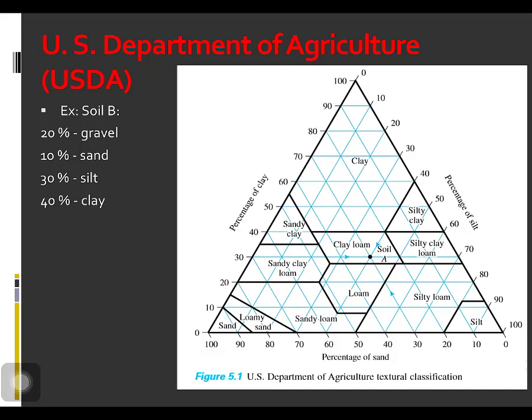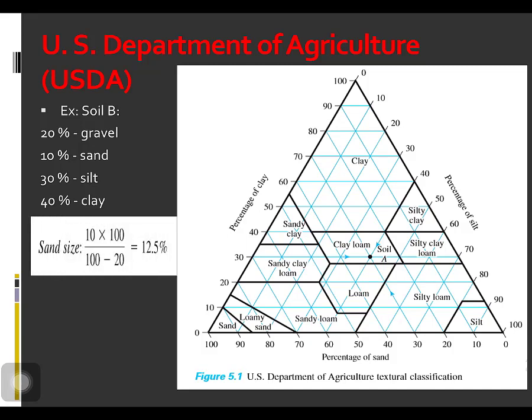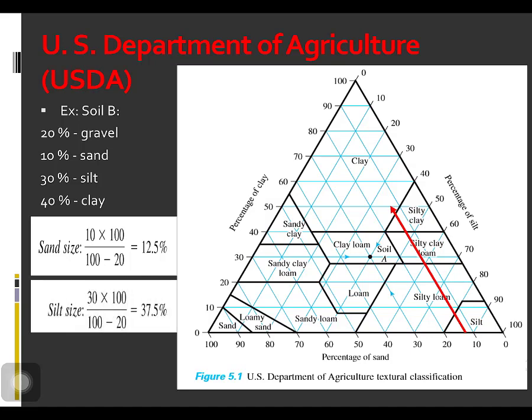Hence, if the particle size distribution of a soil is larger than 2 millimeters in diameter, a correction will be necessary. For the USDA, if the particle size of a soil is greater than 2 millimeters it is gravel, so if the particle size distribution contains gravel, we will apply a correction using the modified textural composition formula. For sand size, the formula is the percentage of sand multiplied by 100 over 100 minus the percentage of gravel, which equals 12.5. Plot 12.5 in the percentage of sand and extend the line upward.